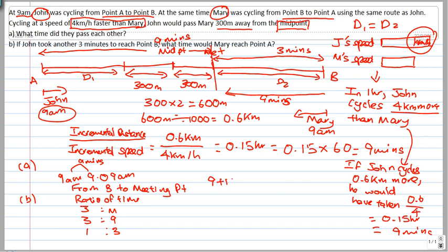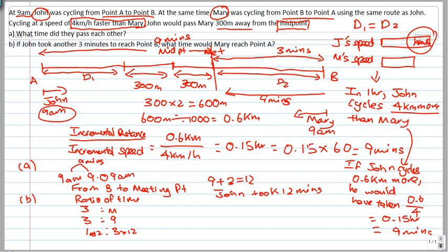John took 9 plus 3 equals 12 minutes for the whole journey. Since the ratio is 1 to 3, Mary would have taken 12 times 3 equals 36 minutes for her whole journey. So since John took 12 minutes to reach point B, Mary would have taken 36 minutes. 9 AM plus 36 minutes equals 9:36 AM — that's your answer for part B.